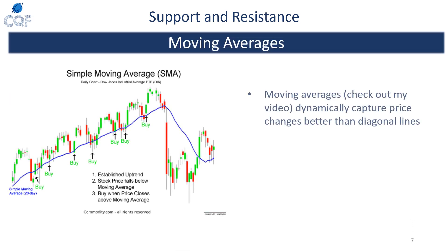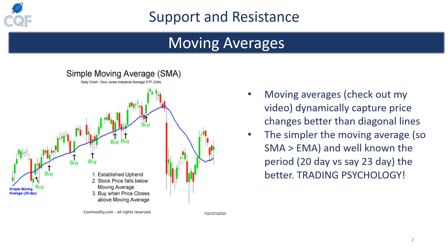Moving averages are another slightly more complex way of determining supports and resistances, similar to diagonal lines but a bit more involved. We have simple and exponential moving averages — if you want to learn how to calculate them check out my video. Retail traders might not even have them on their charts, so they're much less likely to be respected. I'd recommend using simple moving averages with basic time horizons like a 20-day or 50-day. Don't pick a 37-day moving average because no one else will be looking at that.